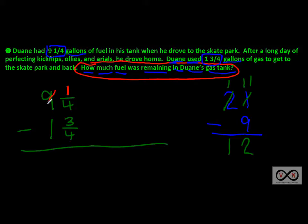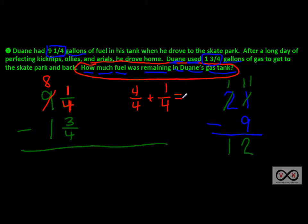Looking at the one-fourth over here, we have to do something to that. We go to our neighbor in the ones place and regroup — take one whole away from there, leaving eight wholes. Now we have to add one whole to one-fourth. Thinking in terms of fourths, because our denominator is four: how many fourths are in one whole? That would be four-fourths. We already had one-fourth, and since we're adding fractions with like denominators, we add the numerators: four plus one equals five-fourths. So we borrowed — or regrouped — and took one whole and added it to our one-fourth, giving us five-fourths.